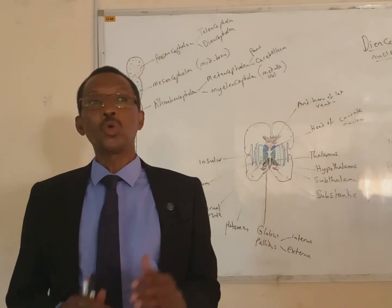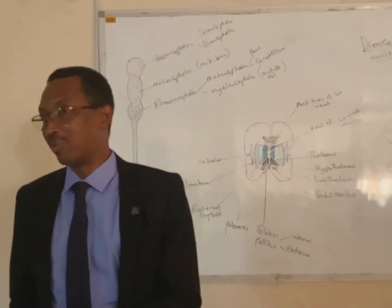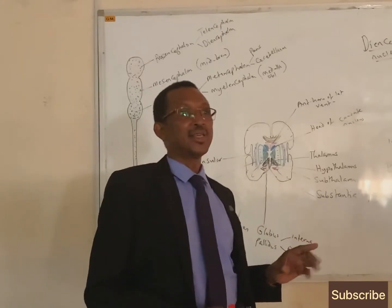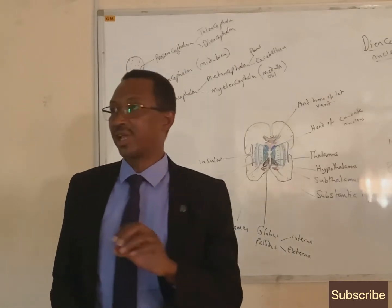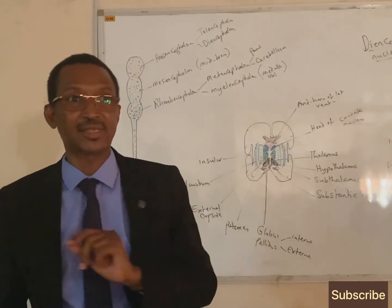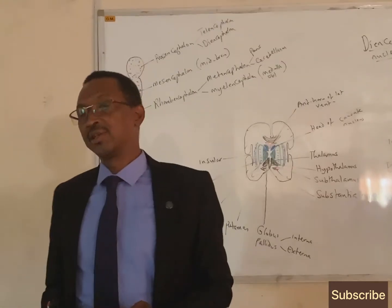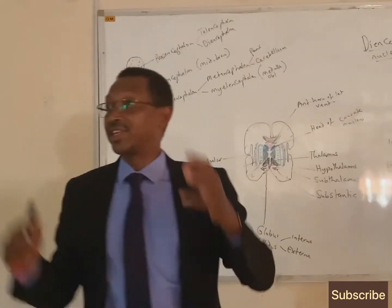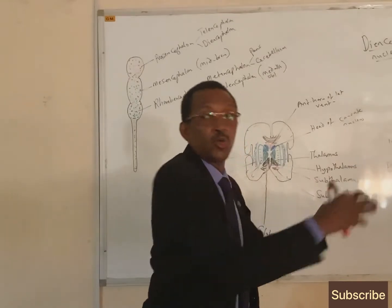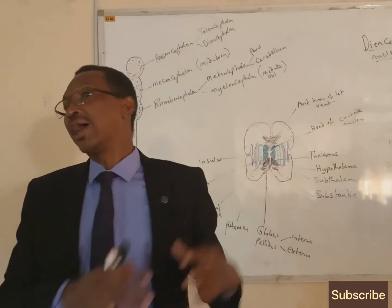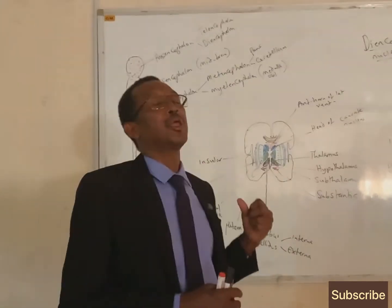The intracerebral group of nuclei are formed by gray matter. The gray matter related to the cerebral hemisphere is basically in two parts: one coating the cerebral hemisphere, which is the cerebral cortex, and those gray matter grouped together within the cerebral hemisphere — those are the nuclei we are talking about.